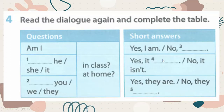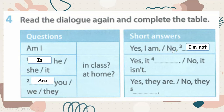Read the dialogue again and complete the table. Questions: Am I? Number one: Is he, she, or it — in class, at home? Number two: Are you, we, they — at home? Yes, I am. No, I'm not. Yes, it is. No, it isn't. Yes, they are. No, they aren't.